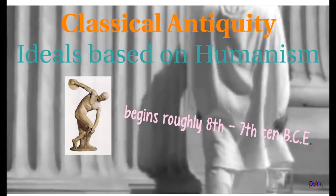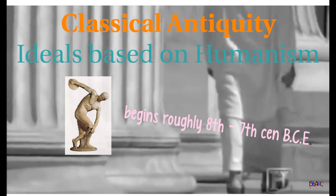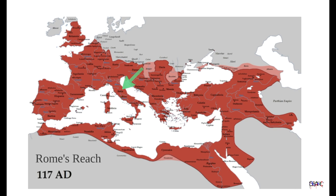This emphasis on intellectual agency is known as humanism. In the 6th century BCE, the Roman Republic was founded and carried forward the ideals of the Greeks. Eventually, the Republic became the Roman Empire, which controlled much of the Mediterranean region.